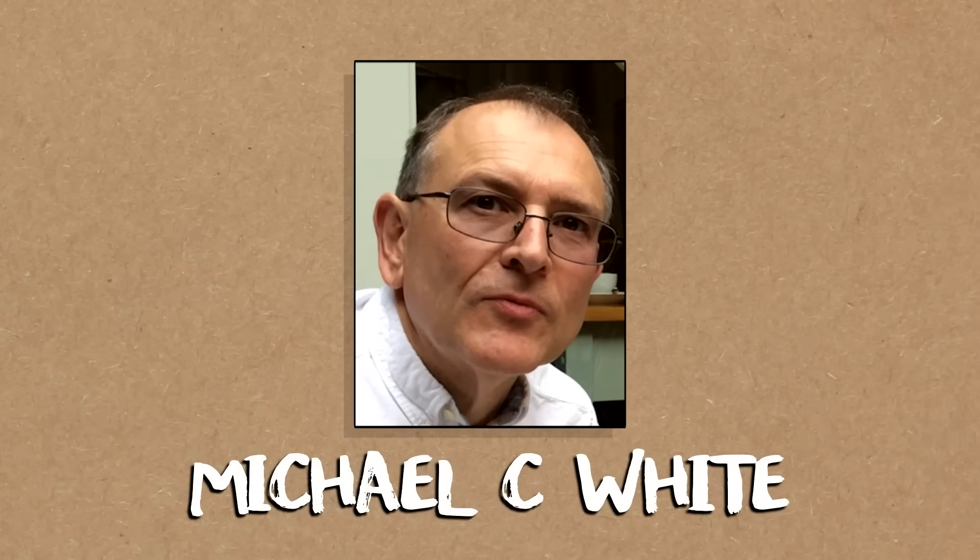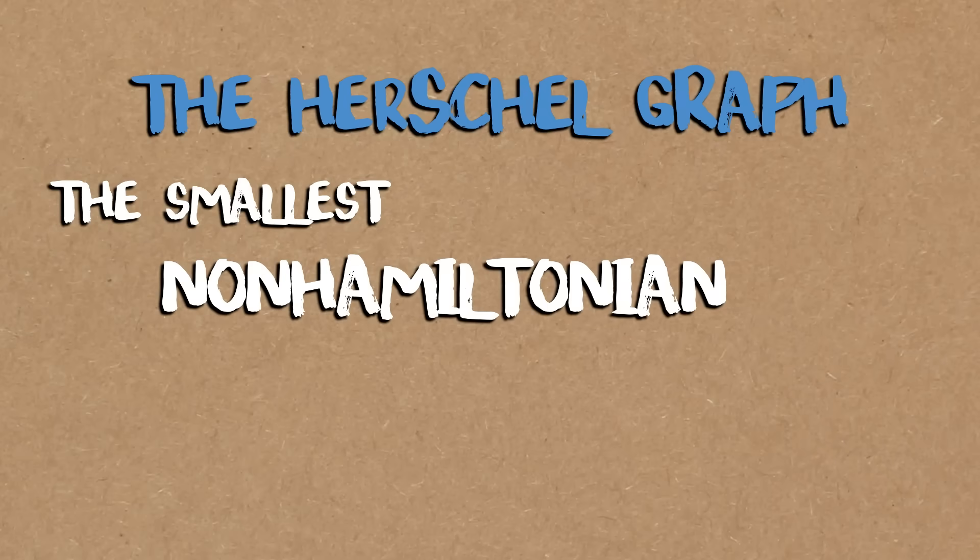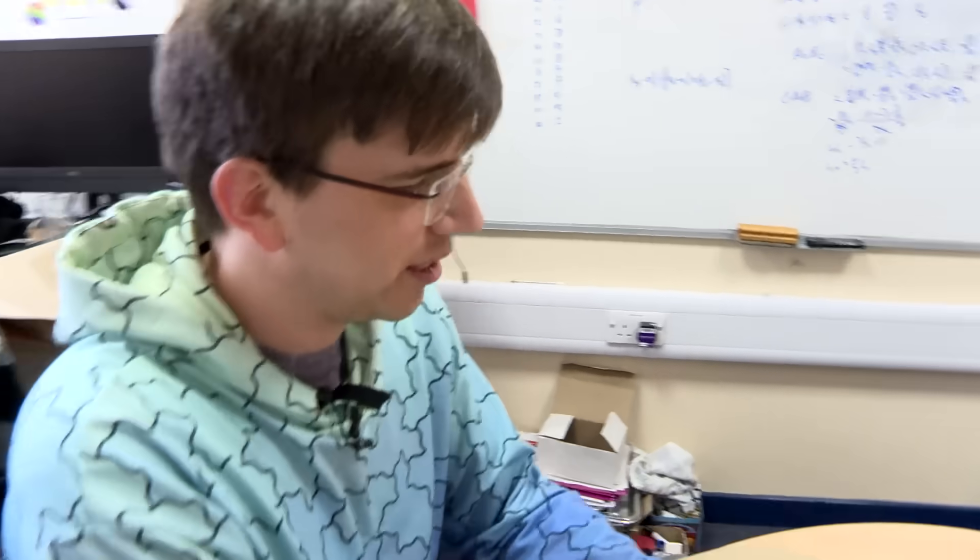I was shown a graph, not a polyhedron. Me and a colleague, Michael White, who's now retired, we of course went straight to Wikipedia. There was a short page about it at the time and it said the Herschel graph is the smallest non-Hamiltonian polyhedral graph.